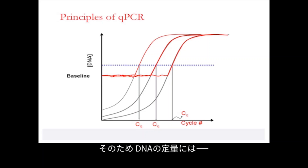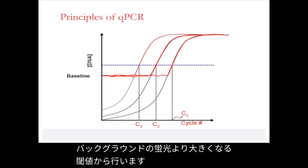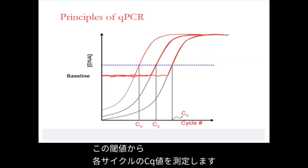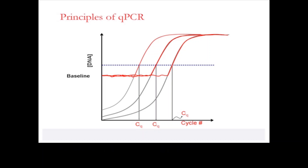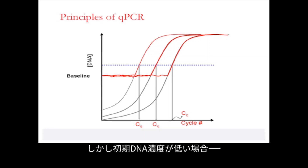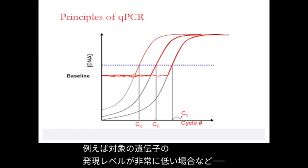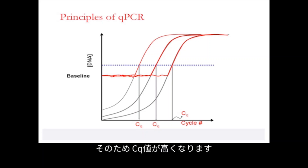In order to quantify the amount of DNA, we need to take measurements during the linear phase of amplification. Measurements are taken from a threshold level where the DNA concentration and its fluorescence is greater than the background fluorescence. From this threshold level, the CQ of each sample is measured. The cycle threshold is the number of PCR amplification cycles required to reach the threshold DNA concentration. If you have a high initial DNA concentration, fewer cycles are required to reach the threshold. However, if you have a low initial DNA concentration — for example, if the expression level of your gene of interest is very low — more cycles are required, and hence the CQ will be much higher.